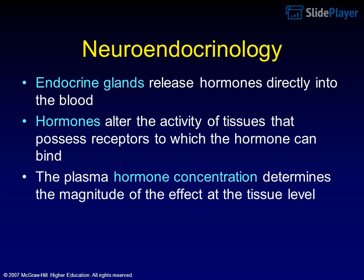Neuroendocrinology: Endocrine glands release hormones directly into the blood. Hormones alter the activity of tissues that possess receptors to which the hormone can bind. The plasma hormone concentration determines the magnitude of the effect at the tissue level.